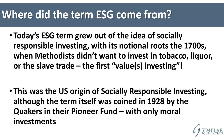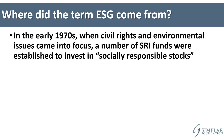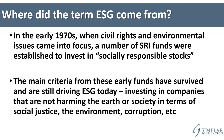That went on for a long time. Then in the early 1900s, the Quakers came up with socially responsible investing — SRI — and created an investment fund called the Pioneer Fund, investing only in what they defined as moral things. This continued into the 1970s, when several major SRI funds were set up focused on environmental concerns, social justice, and corruption. The main criteria from those funds have survived and are what's driving ESG today: investing in companies not harming society or the earth.